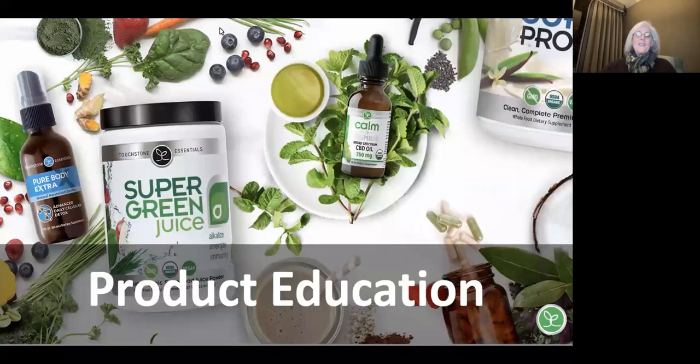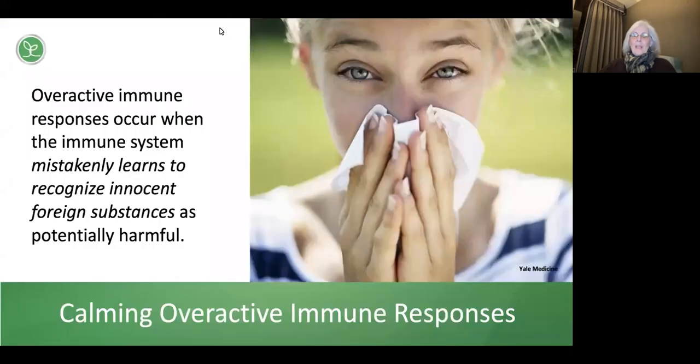So an overactive immune response occurs when our immune system mistakenly recognizes a fairly innocent foreign substance as harmful. When this occurs, the immune system goes into overdrive and releases histamines and leukotrienes. The majority of those substances occur in our nose, eyes, and lungs, and those are the ones that are most affected.